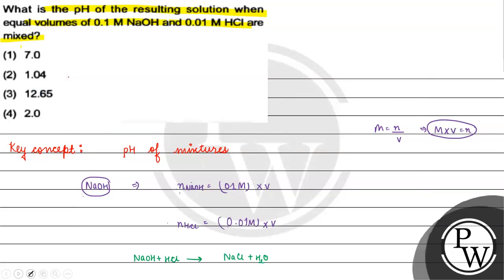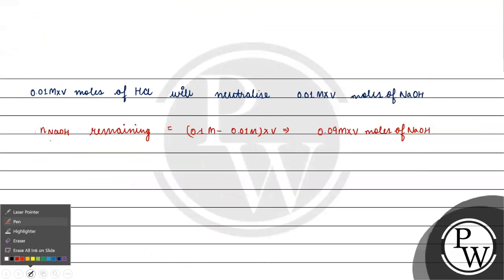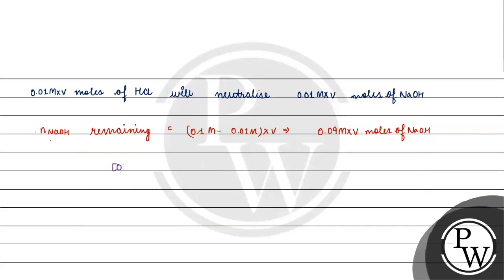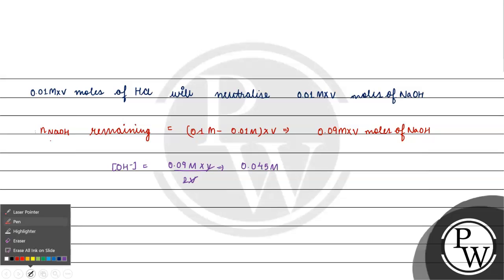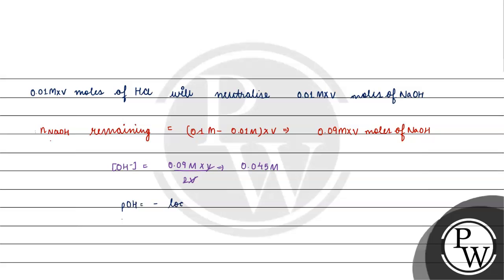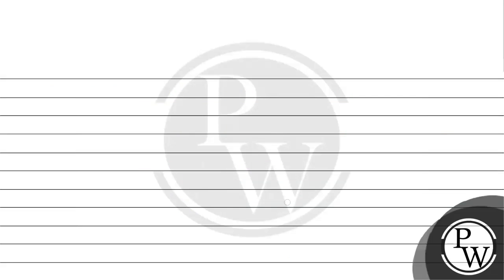And if we talk about hydroxide ion's concentration, then what will happen? 0.09 molar into V by total volume, V plus V, which will come to 0.045 molar. If we calculate pOH as minus log base 10 of hydroxide ion concentration 0.045, what will happen to us? This will come to 1.35.